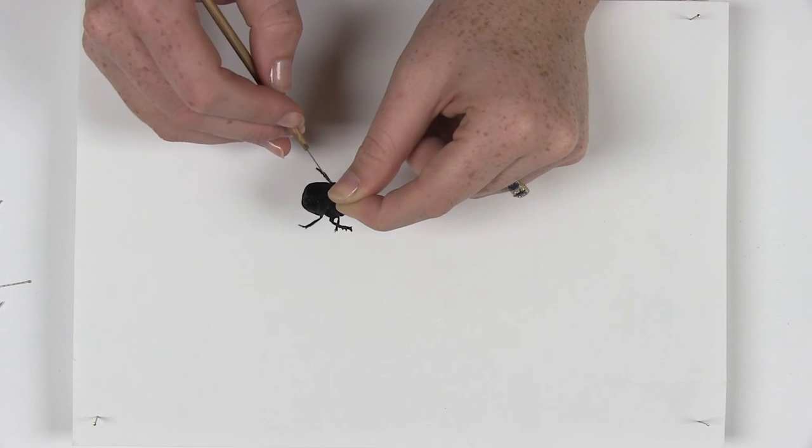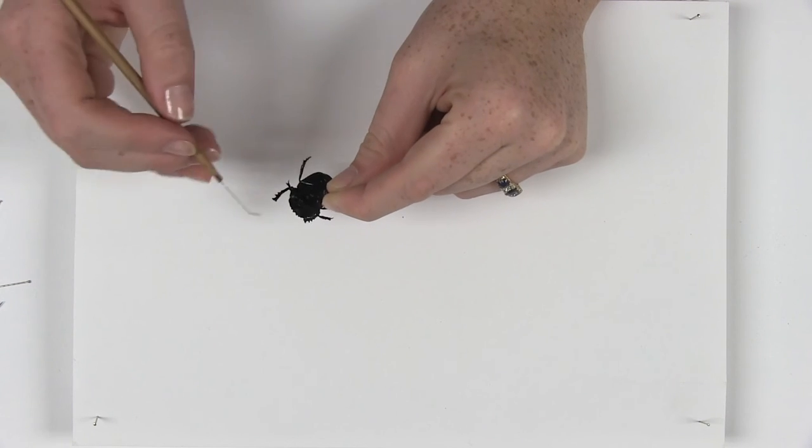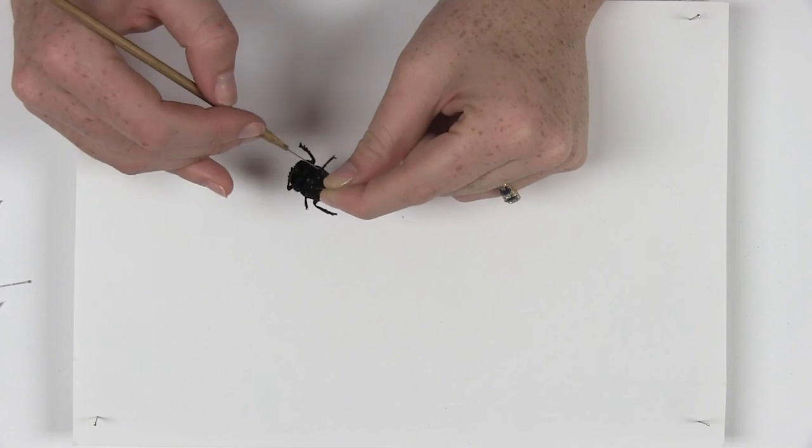Please note that the legs should move easily like this, so either use a fresh insect or one that has been in a relaxing box.